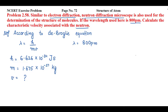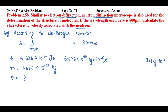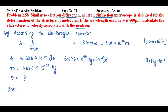Since Planck's constant is in joules and mass is in kg, we need consistent units. We know 1 joule equals 1 kg·m²·s⁻². So Planck's constant becomes 6.626 × 10⁻³⁴ kg·m²·s⁻¹. We also convert the wavelength: 1 picometer equals 10⁻¹² meter, so 800 picometers equals 800 × 10⁻¹² meters.